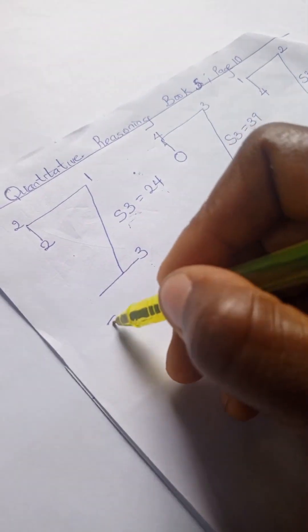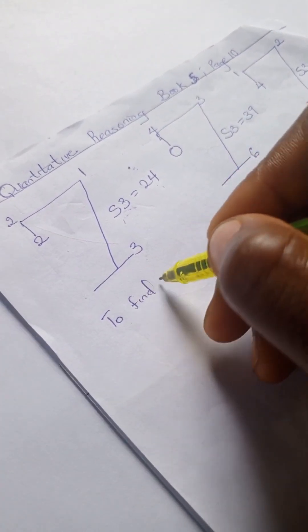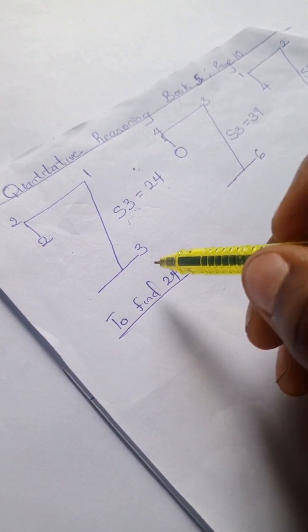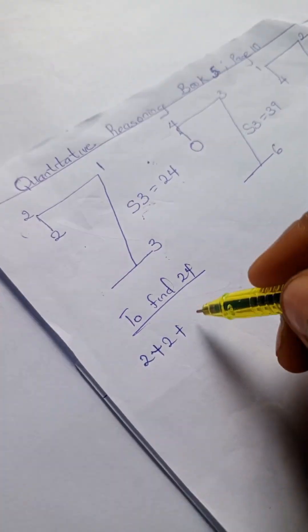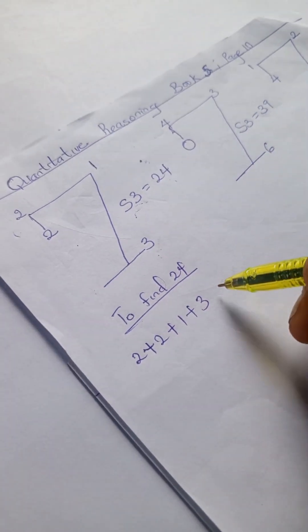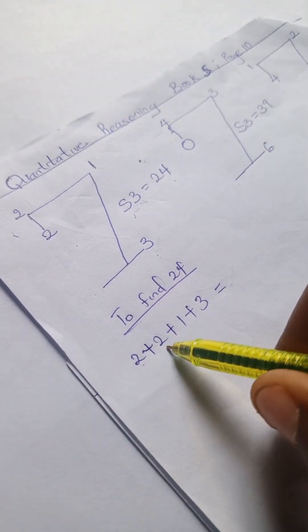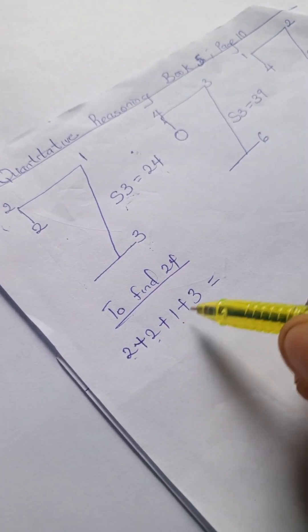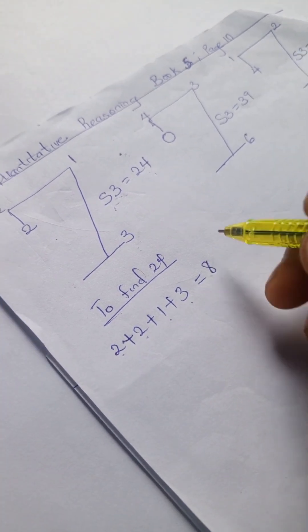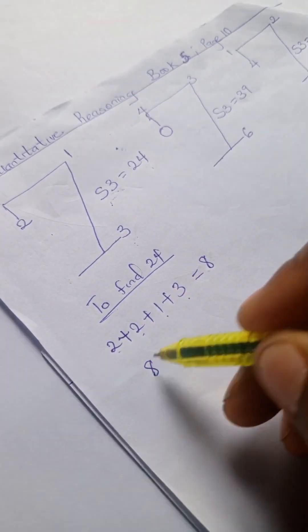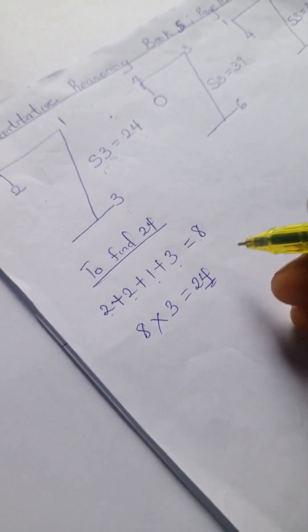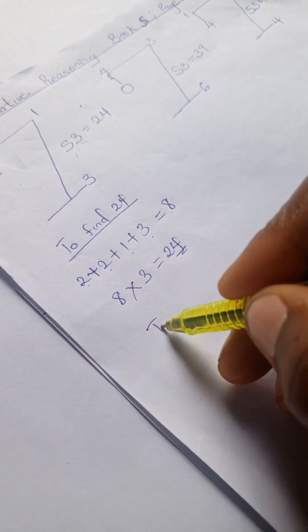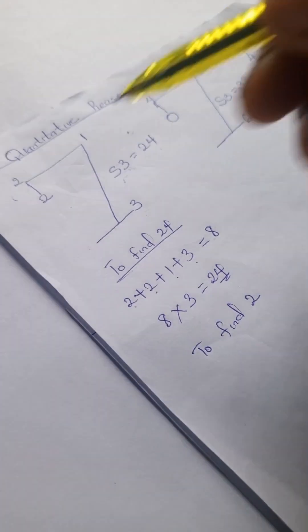So let's find 24. To find 24, we're going to have two plus two plus two plus two plus one plus three. That gives us two plus two is four, plus one is five, five plus three we have eight. So eight times three gives us 24.